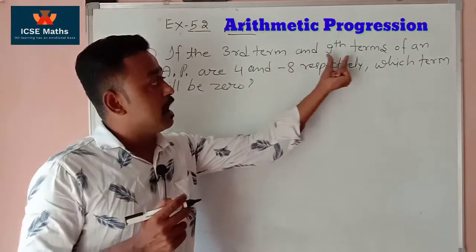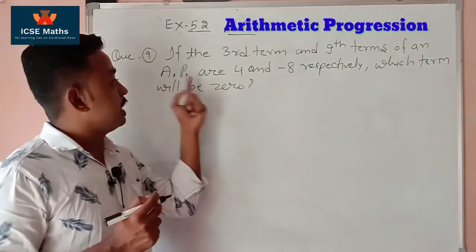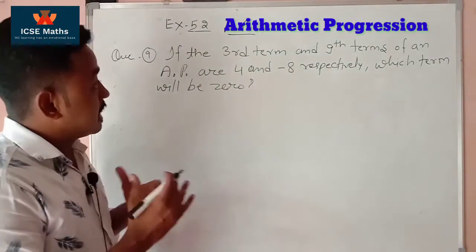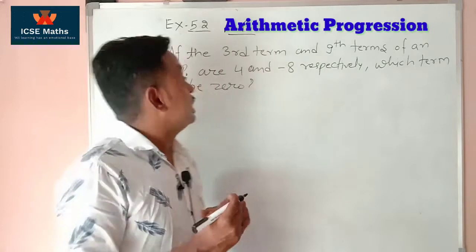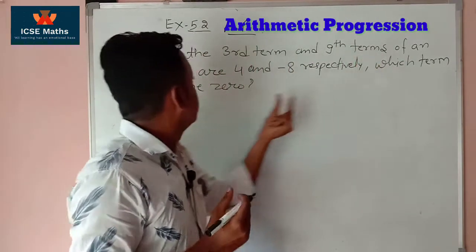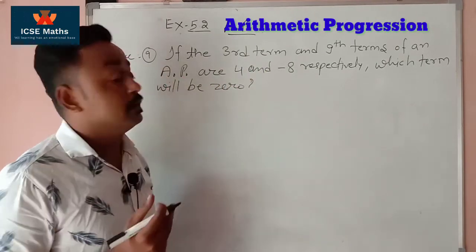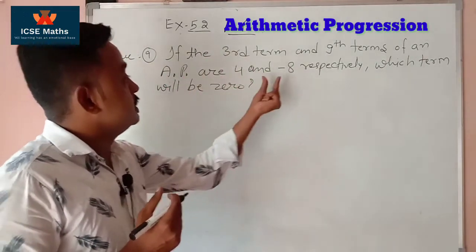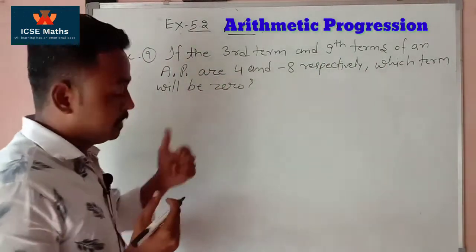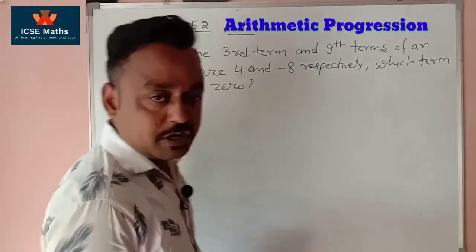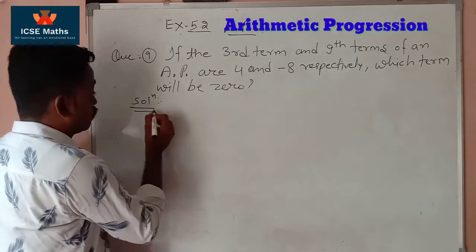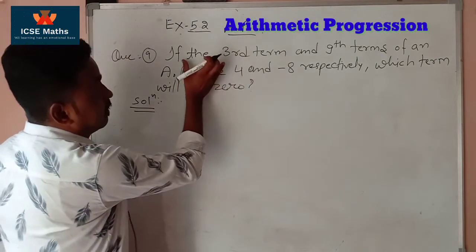The question is: if the third and ninth term of an AP are 4 and minus 8 respectively, then which term will be zero? So the third term is 4 and the ninth term is minus 8, and we need to find which term will be zero.